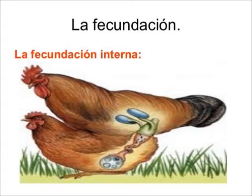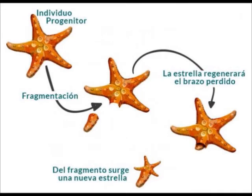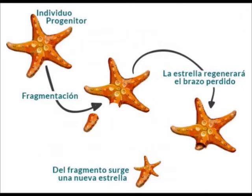Asexual reproduction occurs when there are no gametes; only the somatic line is involved. This type of reproduction usually appears in adverse environmental conditions because it is less costly at the energy level, although it does not generate variability since clones are formed. Among the forms we find: gemation, which appears in cnidarians — where the wall breaks into small fragments that differentiate little by little into adults, forming new individuals throughout their life.